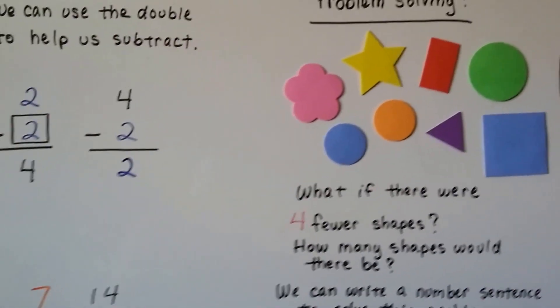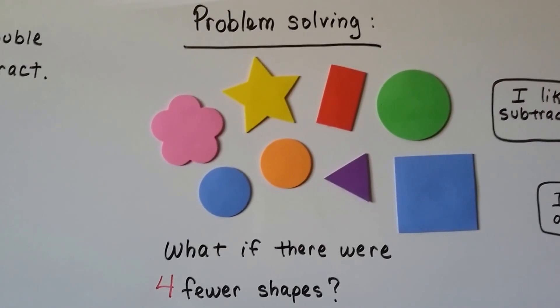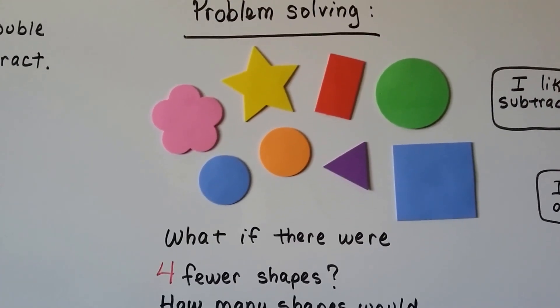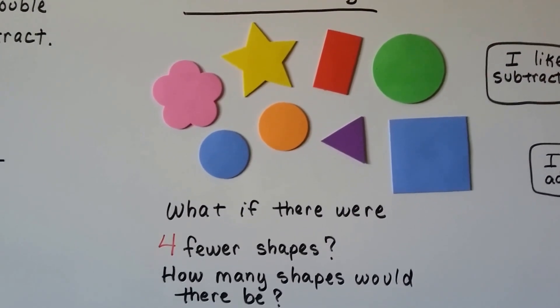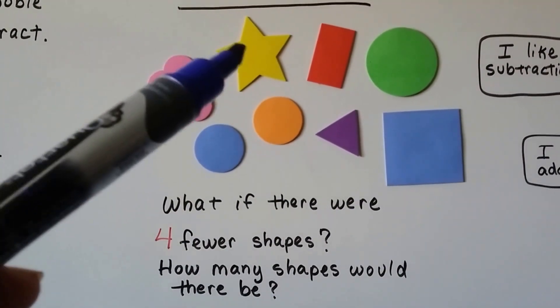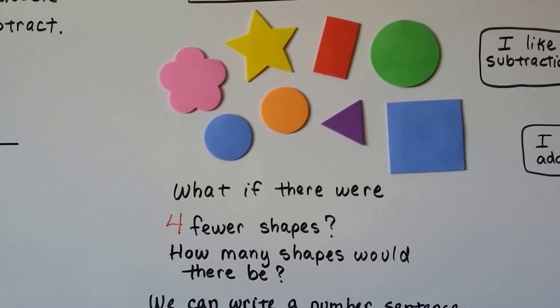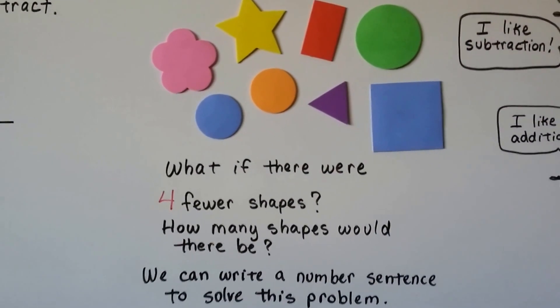Let's try solving a problem. Look at all these shapes. What if there were 4 fewer shapes? How many shapes would there be? There's 1, 2, 3, 4, 5, 6, 7, 8 shapes. We can write a number sentence to solve this problem.